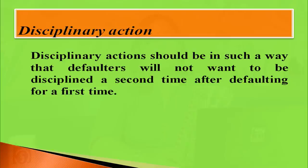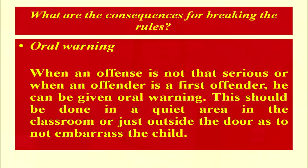Now, some disciplinary actions. These should be carried out such that defaulters will not want to be disciplined a second time. First, oral warning: when an offense is not that serious or when an offender is a first offender, they can be given an oral warning. This should be done in a quiet area in the classroom or just outside the door, so as not to embarrass the child.